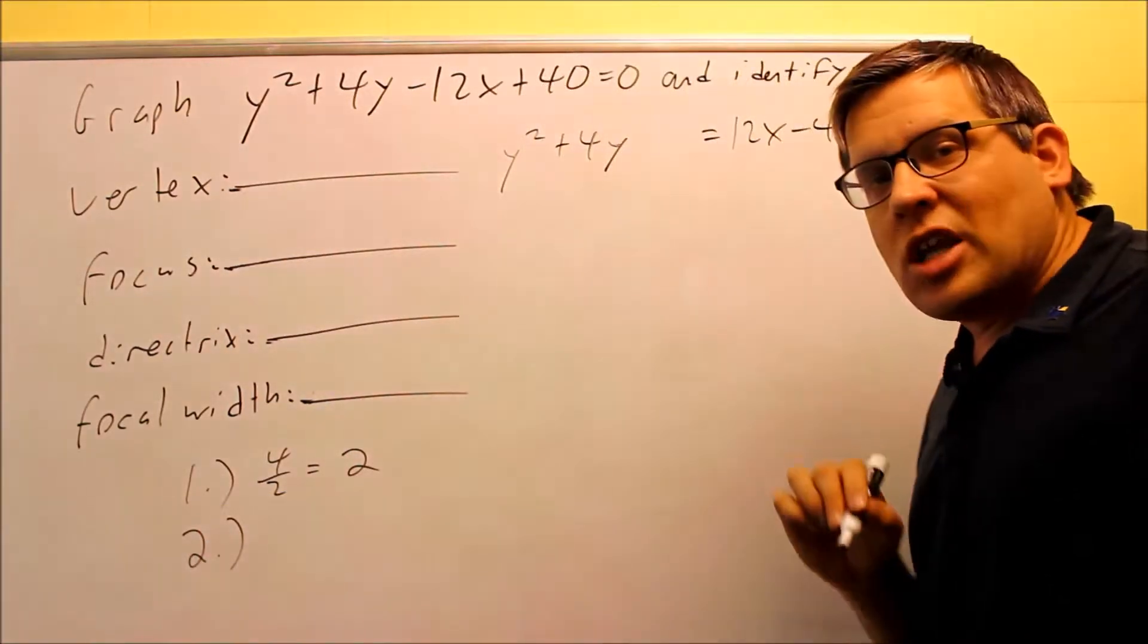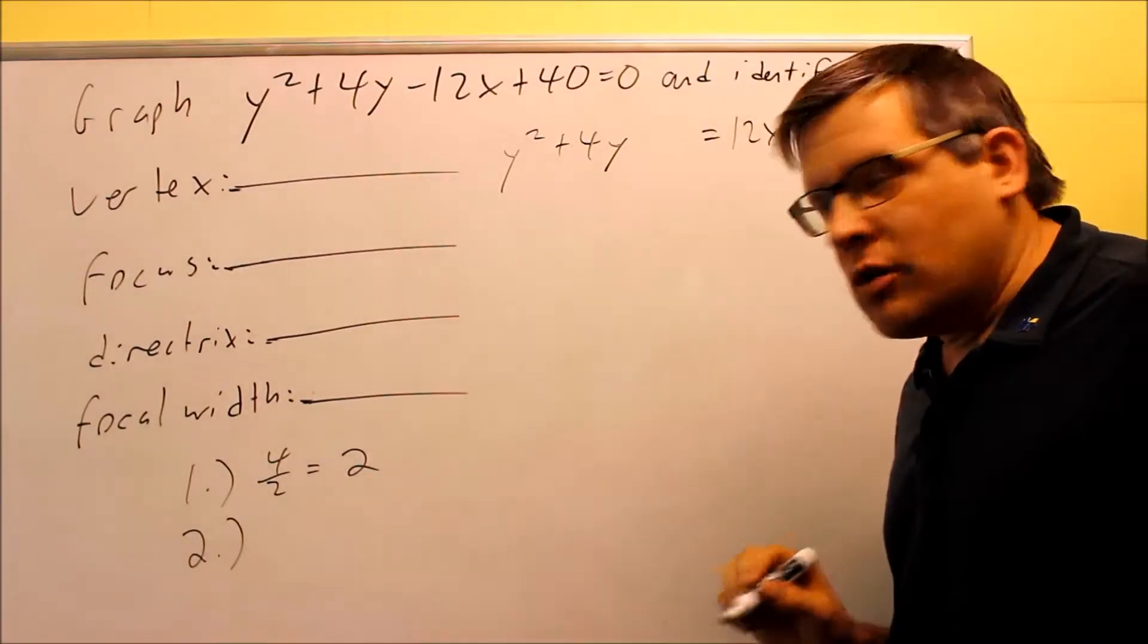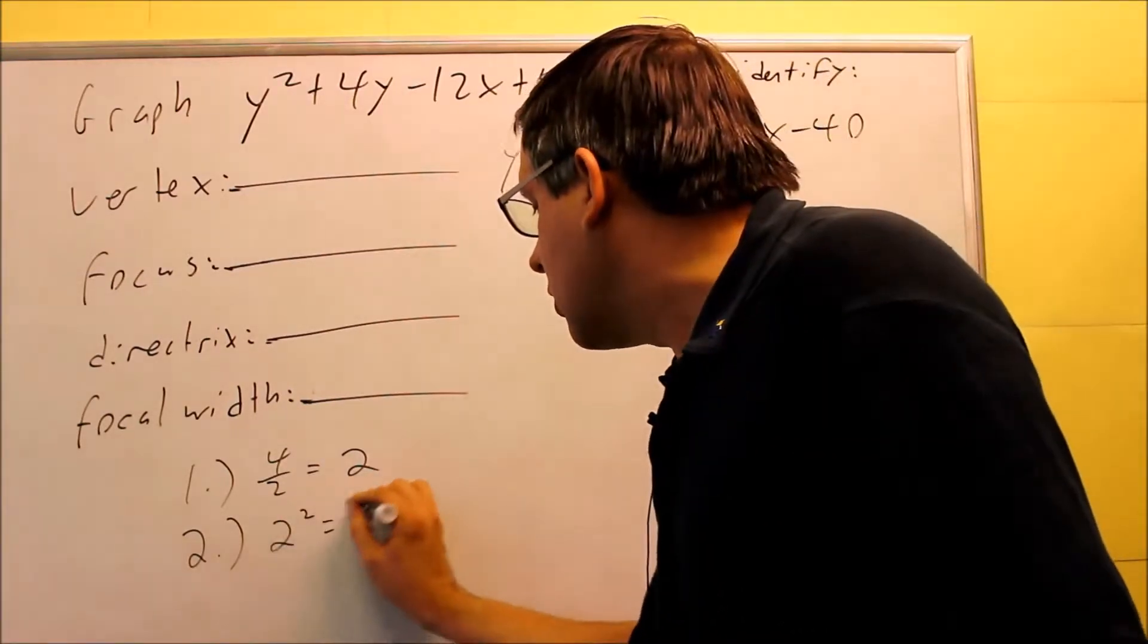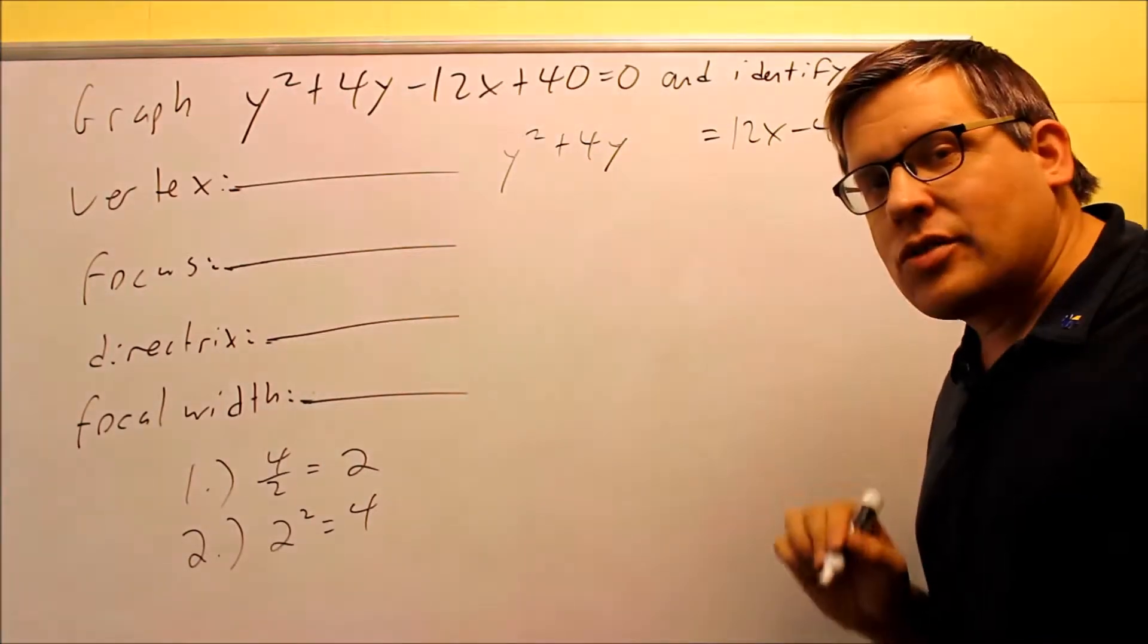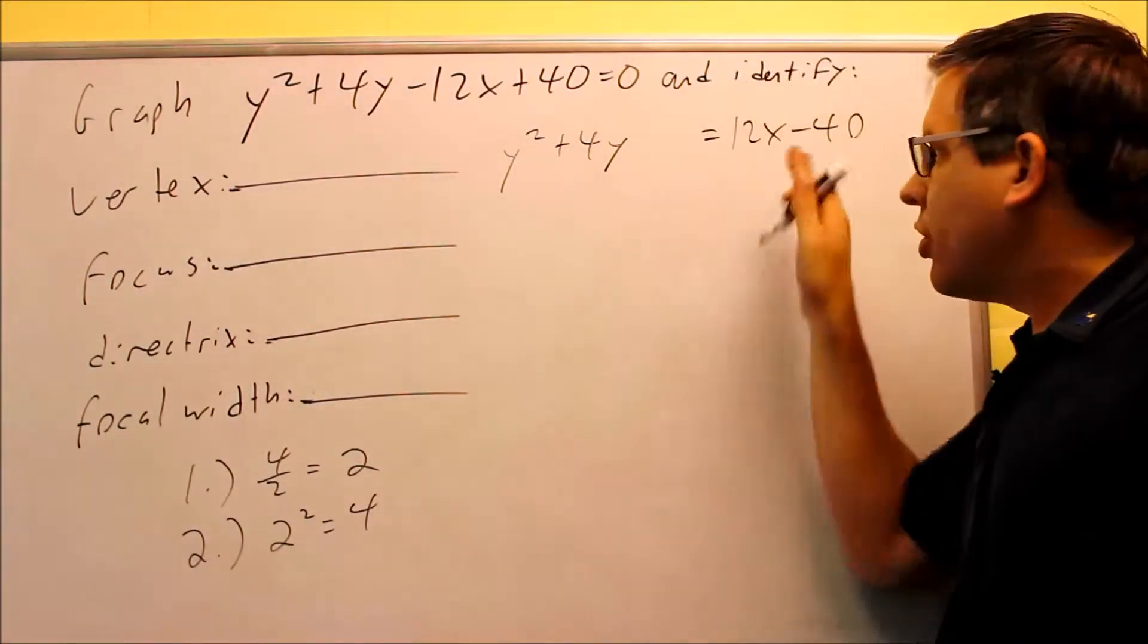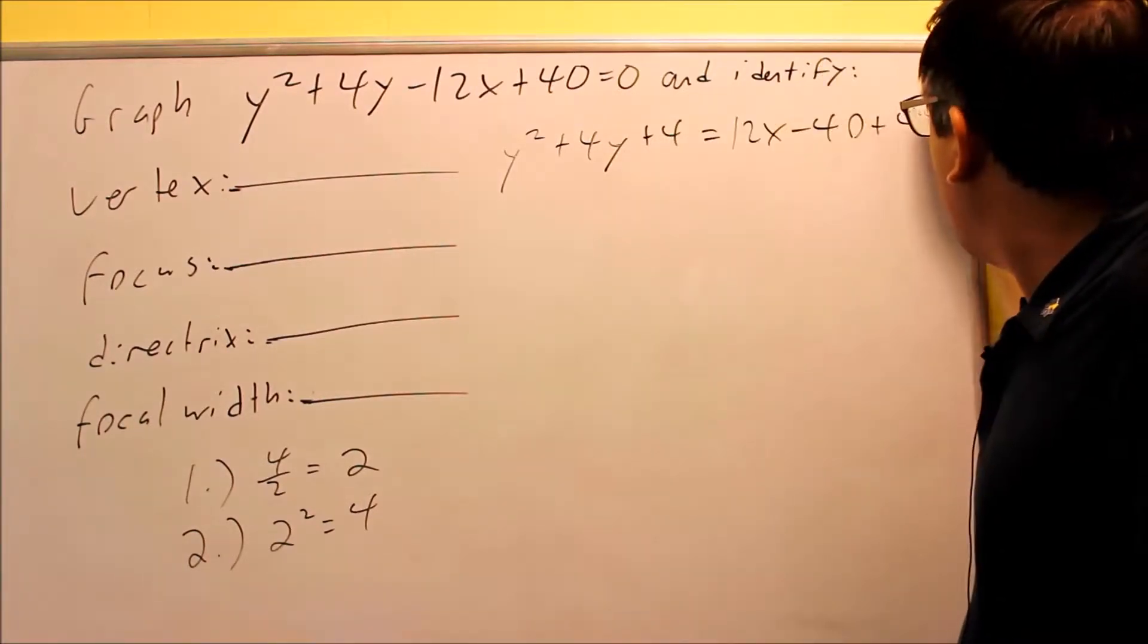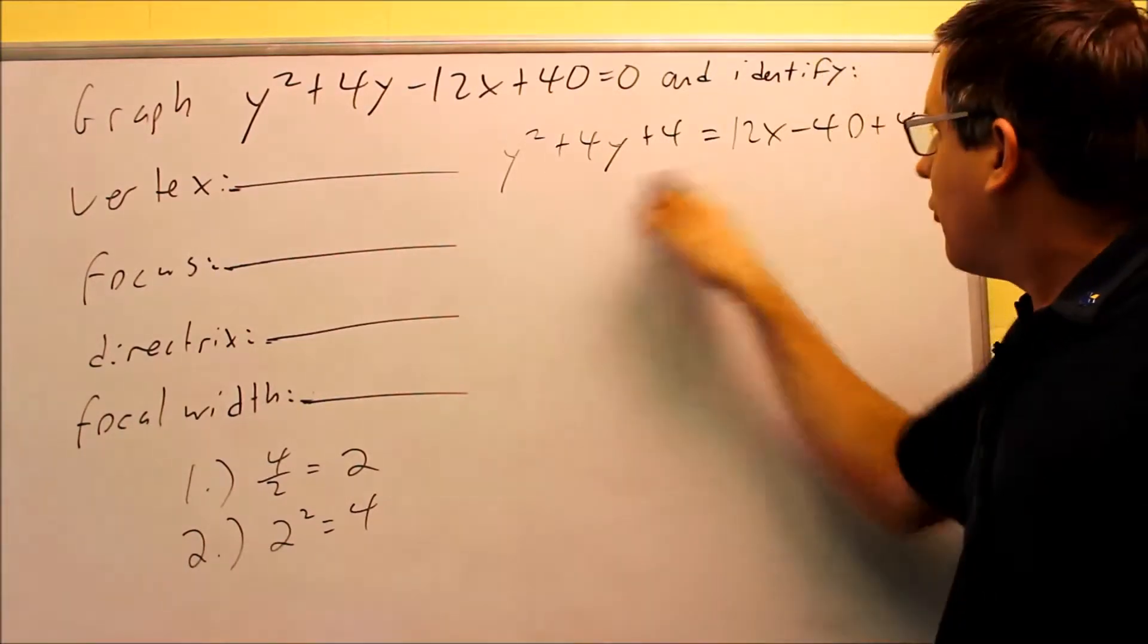Step number 2 is always the same as well. You're going to square the result that you got in step number 1. So we're going to square the 2 and we get a positive 4. The number you get in step number 2, that's the one you're going to add to both sides of the equation. So I'm going to add a 4 here, I'm going to add a 4 over there on that side. We add 4 to both sides.